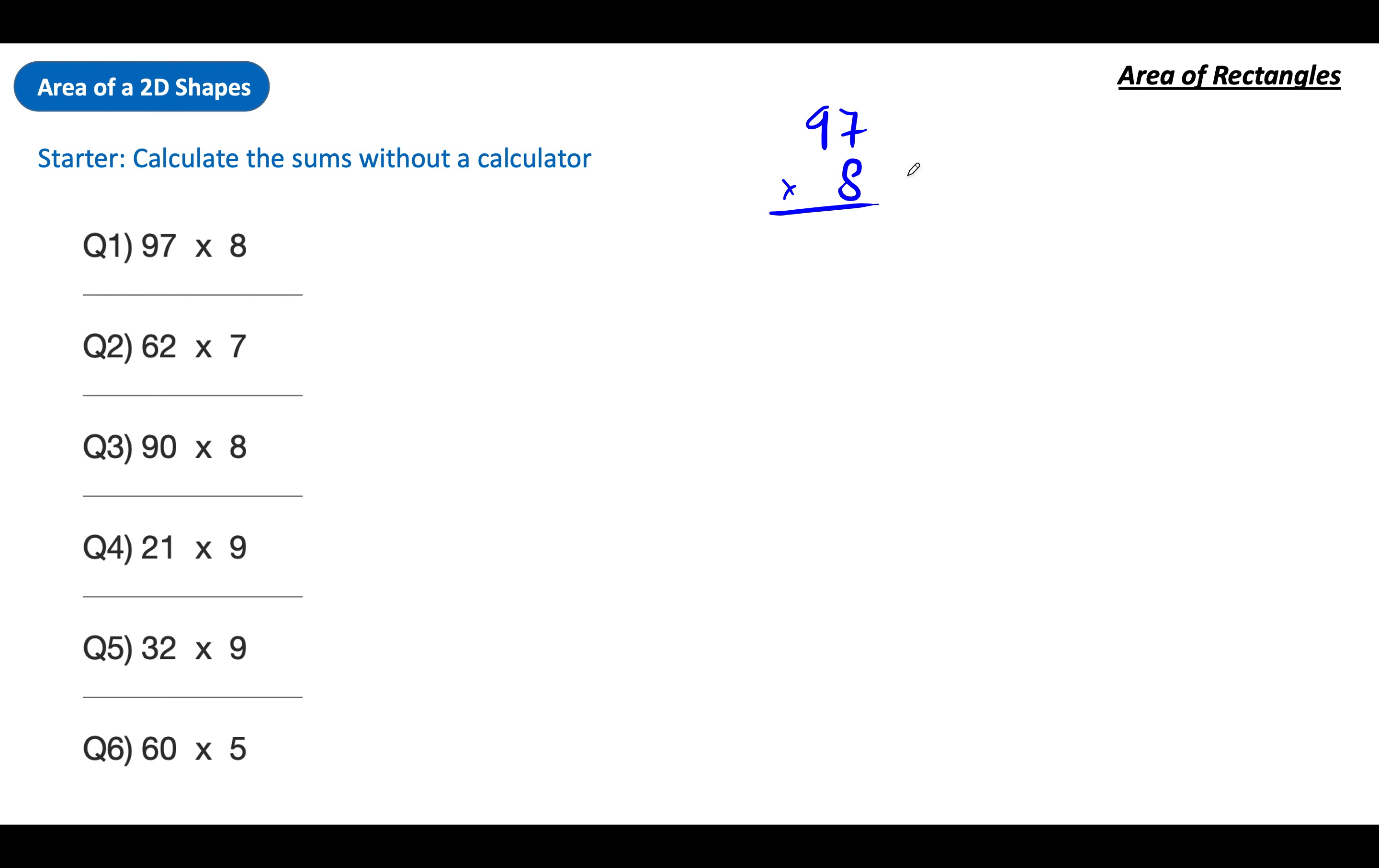Okay, we've unpaused. If I was calculating this top one, 97 times 8, I would do 8 times 7. It's my nemesis isn't it? 7 sevens are 49, 8 sevens are 56. Put the 6 in the units column and carry the 5 across. Then 8 times 9, nine eights are 72, add the 5 and we get 77. So the first answer is 776. The other answers are 434, 720, 189, 288, and 300. Hopefully you got those okay.